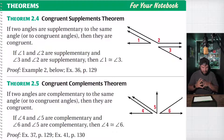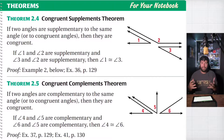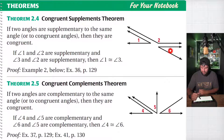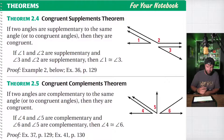So two more theorems for the day. We have the congruent supplements theorem: if two angles are supplementary to the same angle, then they are congruent. If angle 1 is supplementary to angle 2 and angle 3 is supplementary to angle 2, then angle 1 and 3 are going to be congruent. That would make sense because angle 1 would have to be a certain number to be supplementary, and angle 3 would have to be that same number to also be supplementary to angle 2. This is a lot like the transitive property — because they're both supplementary to angle 2, that would make them congruent in a roundabout way.